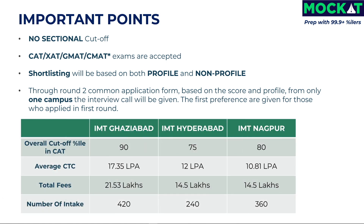The following table provides the overall CAT cutoff for IMT Ghaziabad, IMT Hyderabad, and IMT Nagpur, along with the average CTC, total fees, and number of intake. The overall cutoff percentile is not officially given on any IMT website — these are expected CAT cutoffs. IMT Ghaziabad is the main campus with an average CTC of 17.35 LPA, total fees of 21.53 lakhs, an expected CAT cutoff of 90 percentile, and an intake of 420 students.